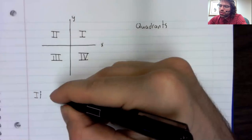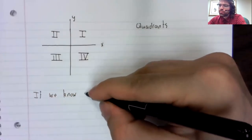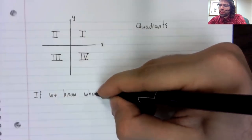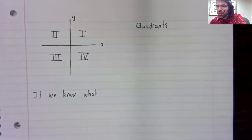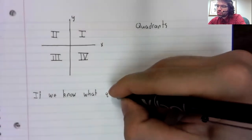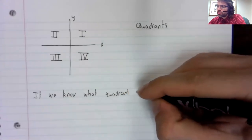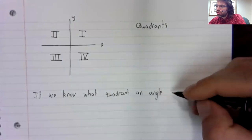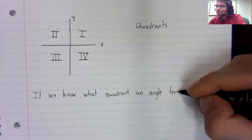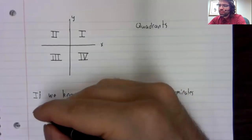If we know what quadrant an angle terminates in, we're now relating this to the sine and the cosine.